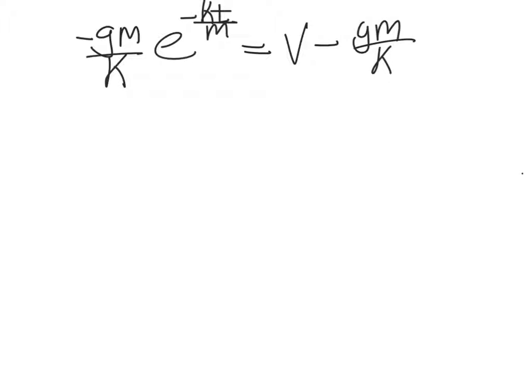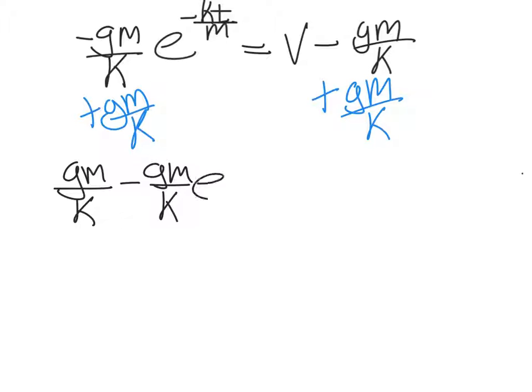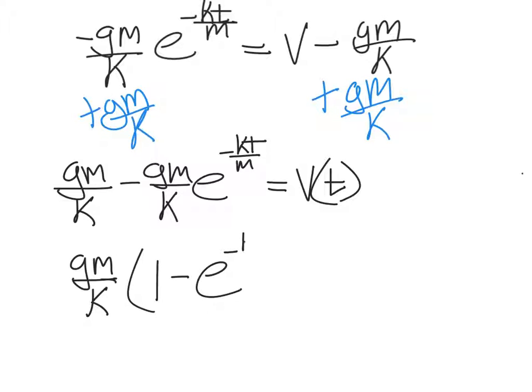So here's where we left off. We're going to add gm over k to both sides. And that pretty much solves the equation for v. Let's rewrite it now. We have gm over k minus gm over k e to the negative kt over m equals velocity. And that now is our velocity as a function of time. An alternative way of writing this is gm over k times the quantity 1 minus e to the negative kt over m equals velocity as a function of time. Either way of writing that is fine.